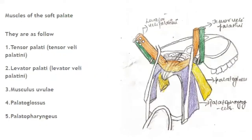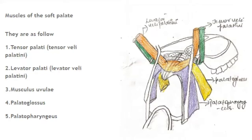Now, the muscles of the soft palate are mainly five: the tensor palatini, levator palatini, musculus uvulae, palatoglossus, and the palatopharyngeus. Two muscles — the tensor palatini and the levator palatini — arise from the base of the skull and descend downwards towards the palate, whereas the palatoglossus and the palatopharyngeus begin from the palate and descend downwards into the lateral surface of the tongue and the pharynx respectively. Apart from these, there is also the musculus uvulae which controls the uvula.